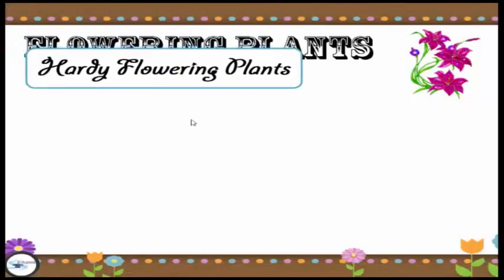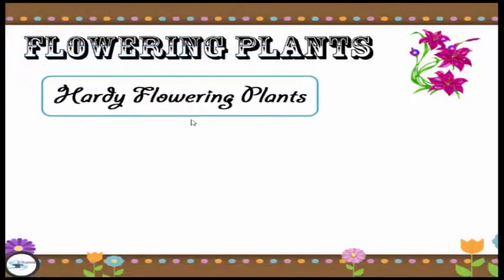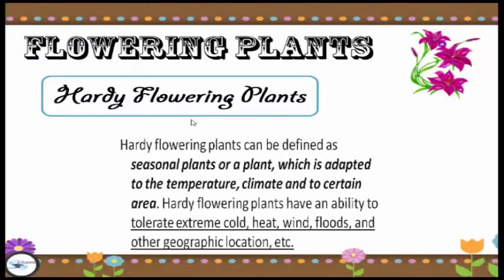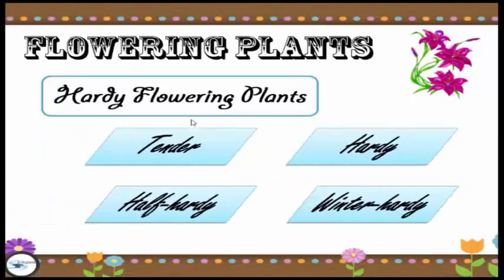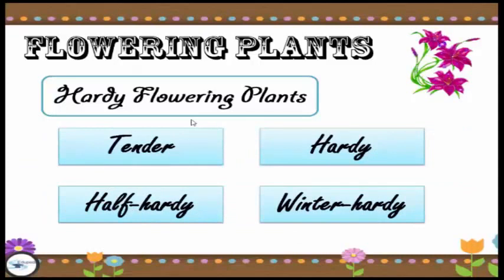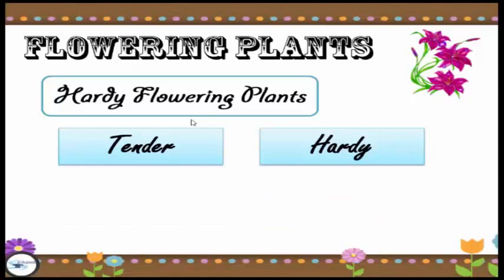The second consideration of flowering plants is the hardy flowering plants. Hardy flowering plants are defined as seasonal plants, or plants which are adapted to the temperature, climate and certain areas. Hardy flowering plants have the ability to tolerate extreme cold, heat, wind, floods and other geographic conditions. We have four kinds of hardy plants: tender, hardy, half hardy and winter hardy.